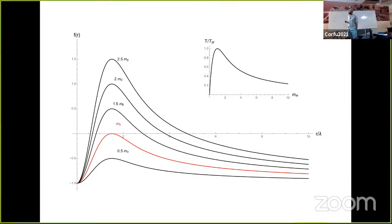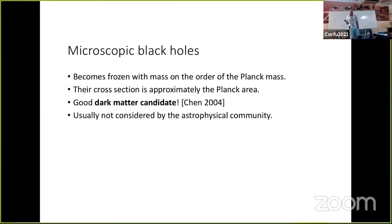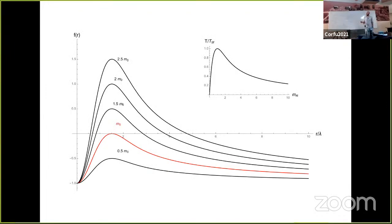What happens to the Hawking temperature? It is close to the ordinary value when the mass is very large, and it goes up. At some point it reaches a maximum value and then very sharply drops to zero. The Hawking temperature is proportional to the gradient at the horizon. At this critical mass the gradient is zero at the horizon, so the temperature goes to zero. Because of this, the black holes instead of evaporating completely become frozen at a mass proportional to the Planck mass — this is called a Planck remnant.